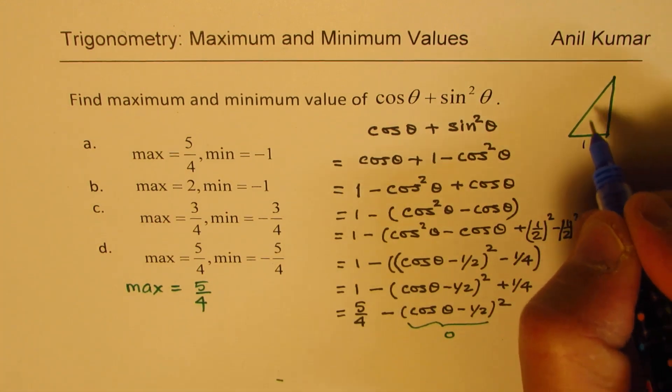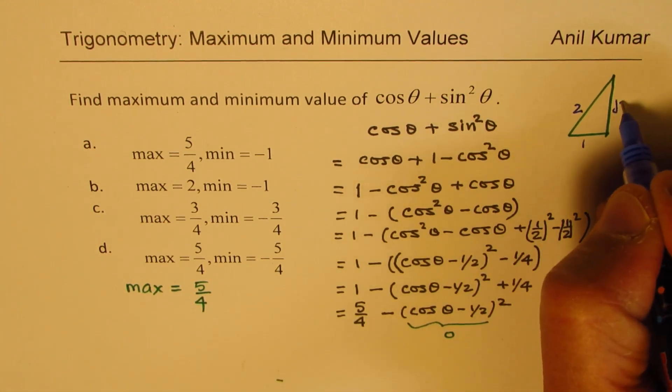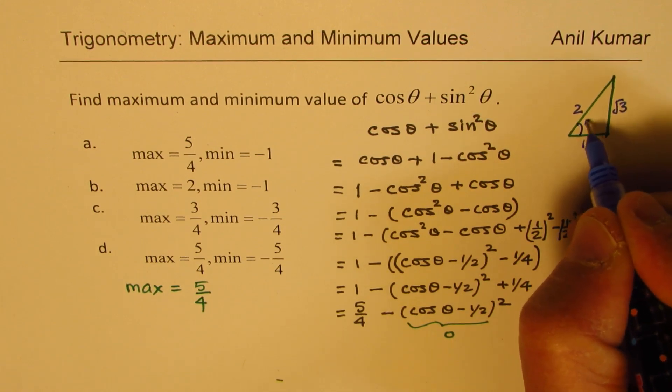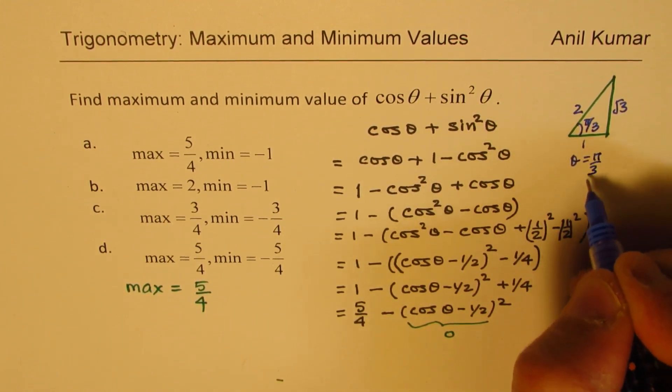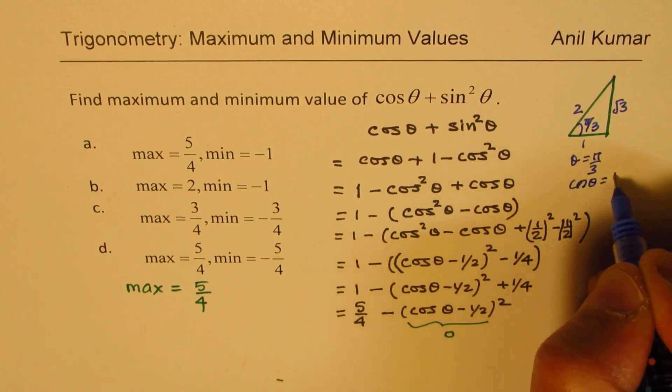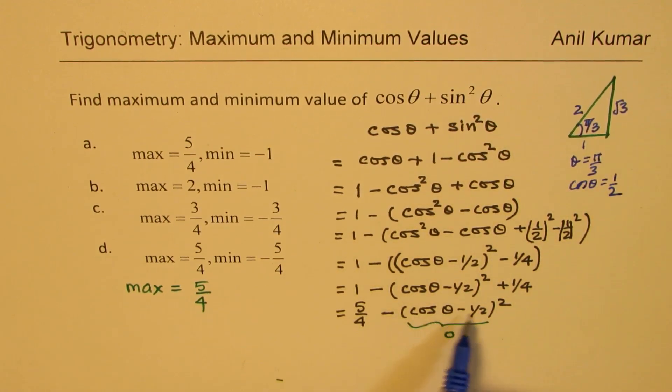So if we have this special triangle, then cos θ is 1/2 for π/3. So for θ = π/3, cos θ = 1/2. That will make this 0 and we'll get the maximum value.